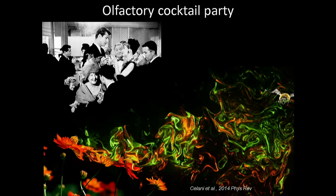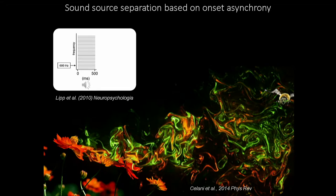I also read the paper by Hopfield and found this sentence very inspiring: 'The variable nature of turbulent airflow makes such a remote sensing problem solvable if the animal can make use of the information conveyed by the fluctuations with time of the mixture of odor sources.' If you are an insect with a small antenna and no spatial resolution, you need good temporal resolution to do source segregation. This brings in the olfactory cocktail party analogy. When we solve the cocktail party problem, our auditory system can use onset asynchrony to segregate concurrent sounds.